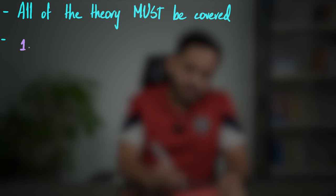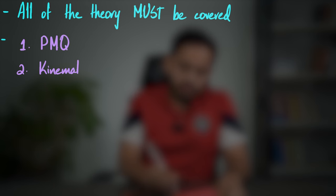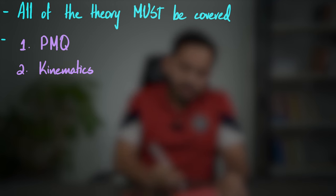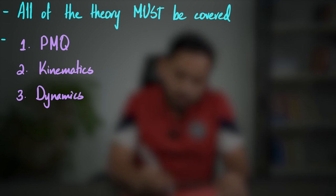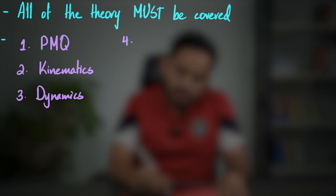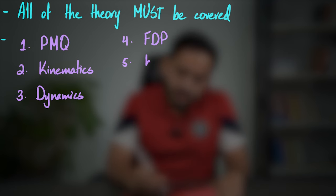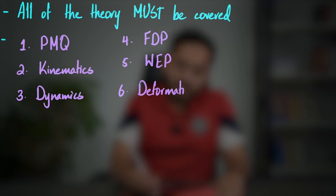Let me write down the syllabus topics in a certain order and explain that order. The first topic is physical quantities and measurement. The second is kinematics — speed, distance, time, acceleration, and graphs. The third is dynamics — Newton's laws, momentum, and related concepts. The fourth is forces, density and pressure — including hydrostatic pressure and upthrust. The fifth is work, energy, and power. The sixth is deformation of solids — Young's modulus and springs.